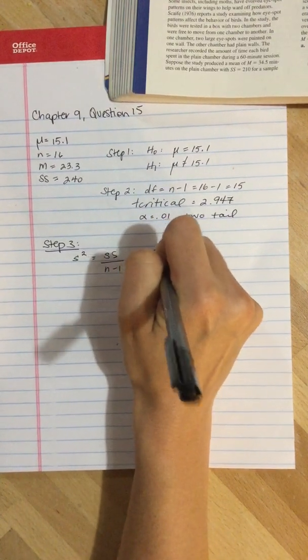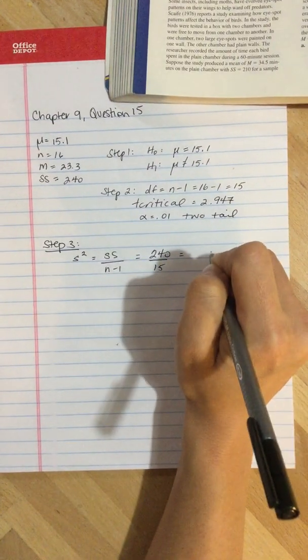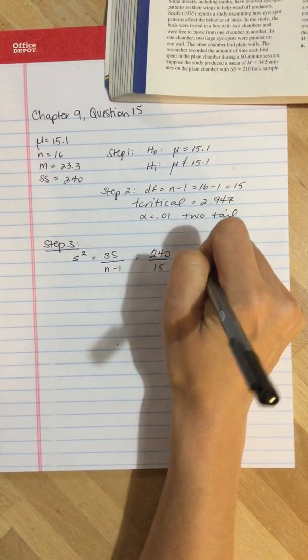So 240 divided by 15, and that equals 16.